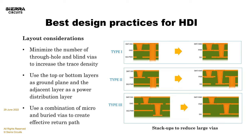If you're a layout designer and you're having trouble breaking out your design and then you add another two layers and keep adding layer pairs to finish your routing, that is the wrong way to use HDI. The best way to use HDI is to plan a little bit ahead of time, visualize your stack-up — that's why we have a stack-up tool — make sure your stack-up is manufacturable, and then design to that stack-up. A lot of our customers standardize on some stack-ups once they're comfortable with them, and that's a great idea.